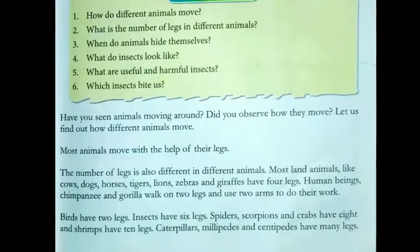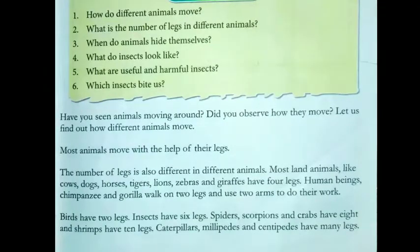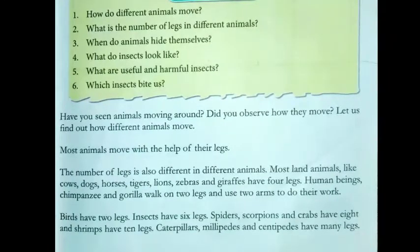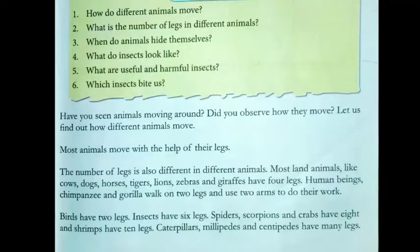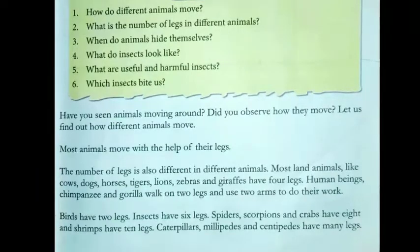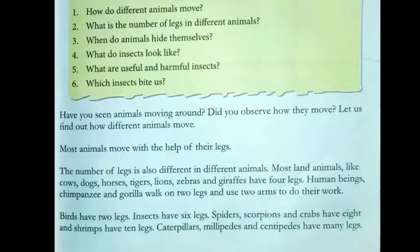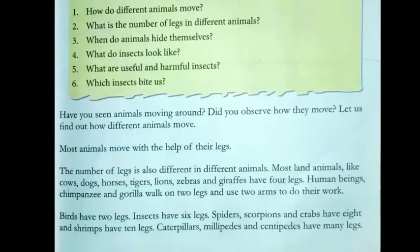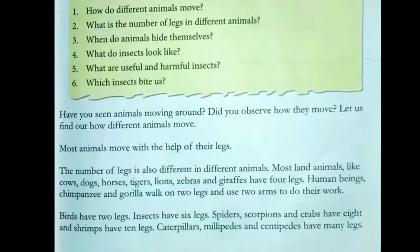Birds have two legs — birds ke bhi do legs hote hai. Insects ke kitne legs hote hai? Six. Spiders, yaani ki makdi, scorpions yaani ki bichu, and crabs yaani ki kekde — inke kitne legs hote hai? Eight. And shrimps have ten legs.